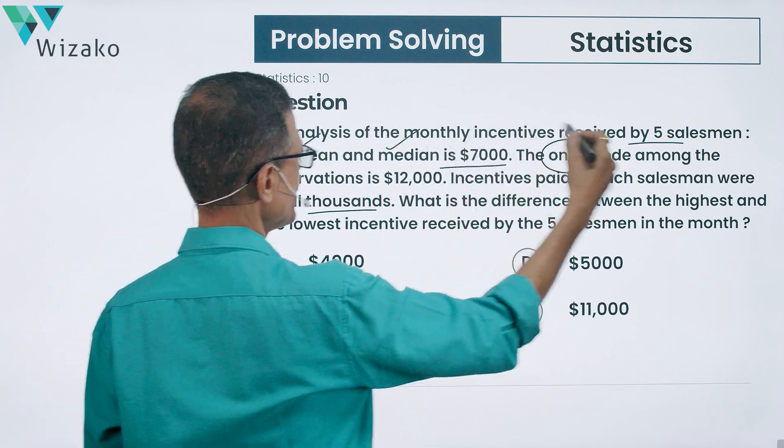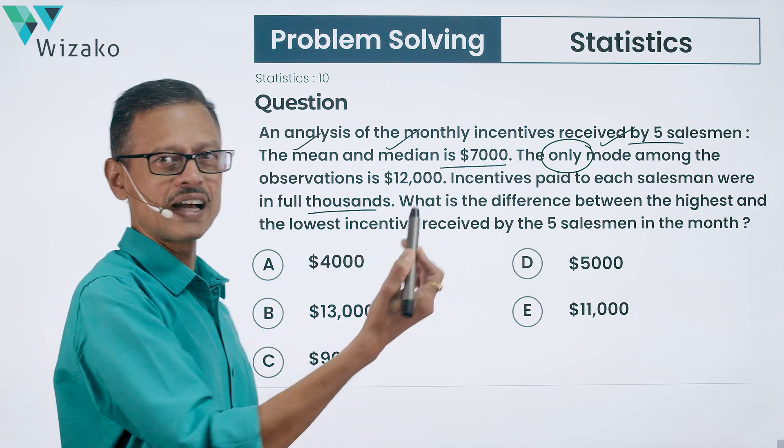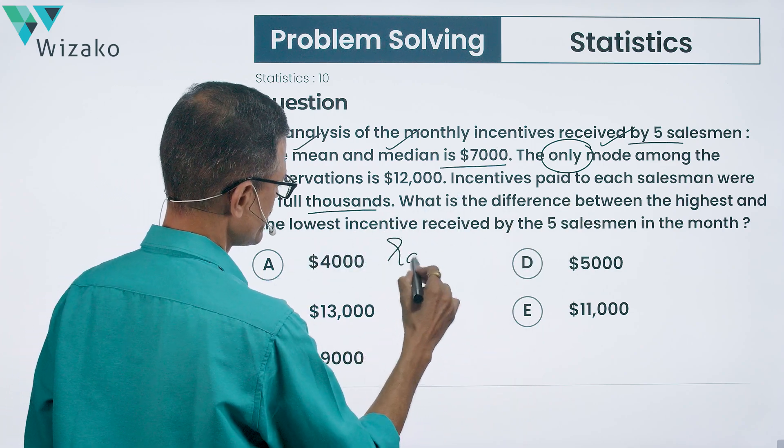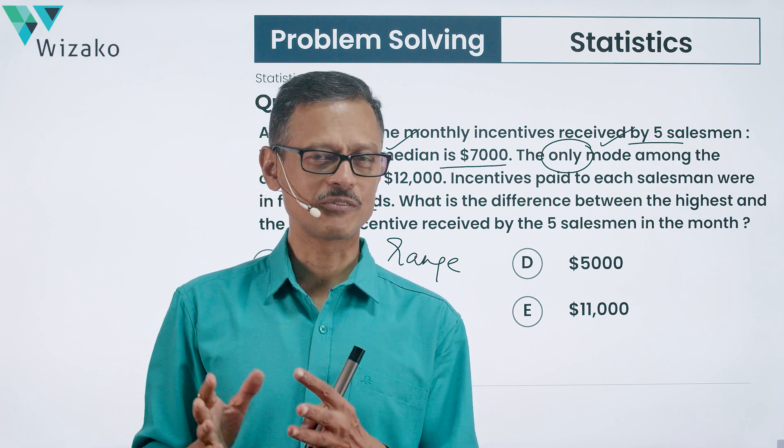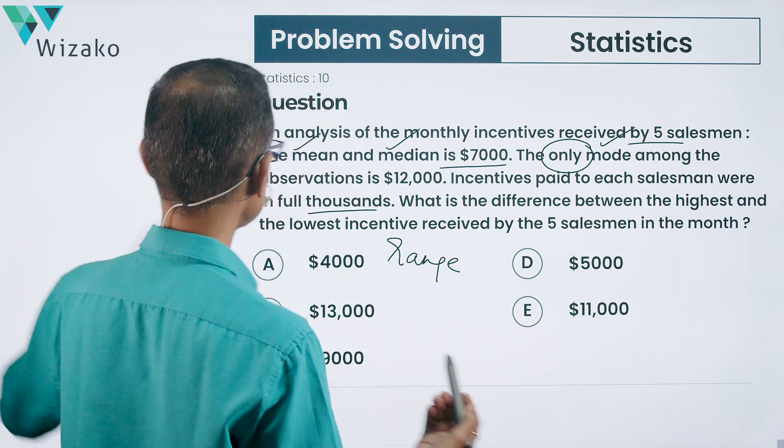Look at it. We're talking about mean, median, mode. The difference between highest and lowest is nothing but the range. We've covered four of the important statistical parameters in one single question. Lovely question. Let's get started and make sense out of it.